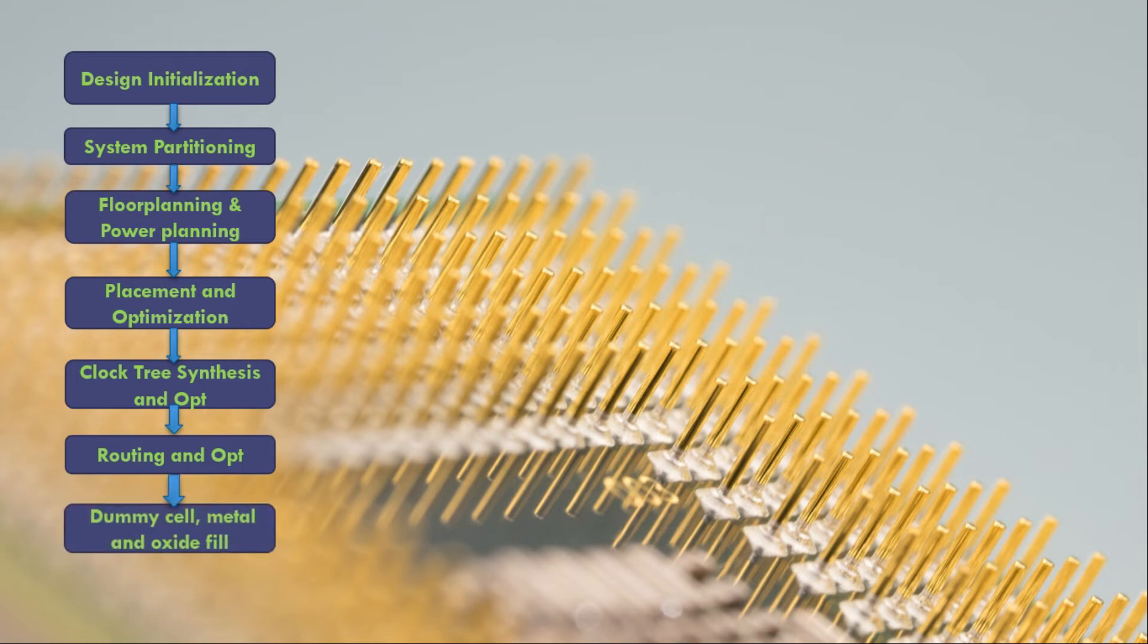Once the routing and optimization is done, then we go for dummy cell or metal and oxide fill. So this dummy fill insertion happens basically because of the reason that during chemical mechanical planarization, which is polishing of the wafer, there the density of the chip is very important. If it is not proper, then the wafer may undergo mechanical stress in only some region and that will impact the manufacturing of the chip itself. So the transistors and metals will not be manufactured properly. So the fabrication, this is the requirement from the fabrication that it needs to have the uniform density. In order to achieve that, we will do this dummy cell, dummy metal and dummy oxide fill.